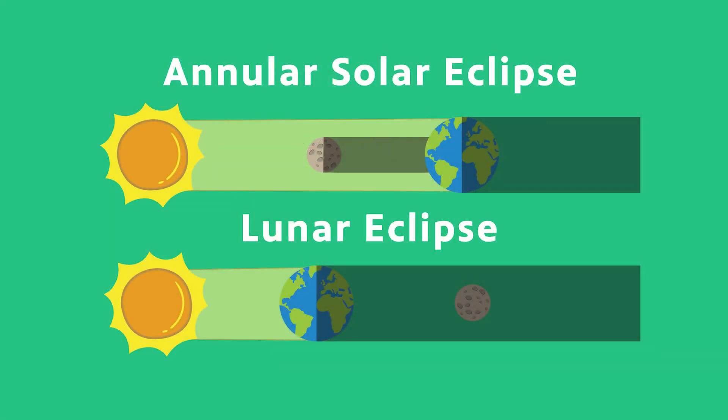With a lunar eclipse, we're on the other side of the earth's orbit — the earth is casting a shadow out into space and the moon passes through that shadow. So there's no bright surface of the sun to produce a ring or annulus to make an annular lunar eclipse.